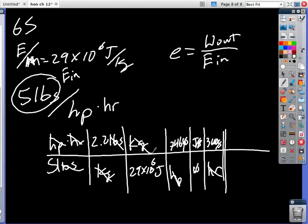It's a test only on chapter 12. 2.2 times 746 times 3,600 divided by 5 times 29 times 10 to the 6th. And that's 4.07%.